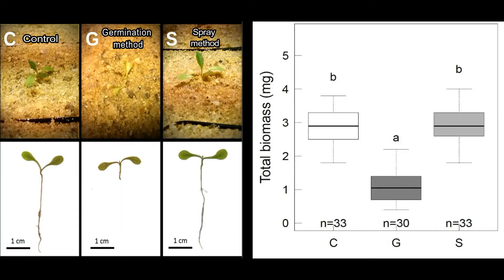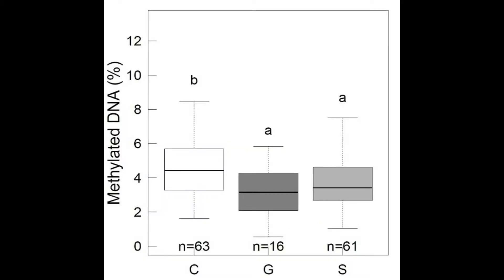Our results demonstrate that the spray application, as opposed to the traditional germination method, does not reduce plant growth or performance compared to the untreated plants. Moreover, the spray application has similar and systemic DNA demethylating efficiency as the germination method, around 50-20% relative reduction.